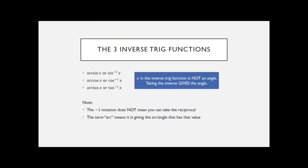We have the inverse of sine, cosine, and tangent. We don't have any inverses of the other three. There are no special symbols for that. You just have to remember that it's the reciprocal, so it's basically the same sort of thing.